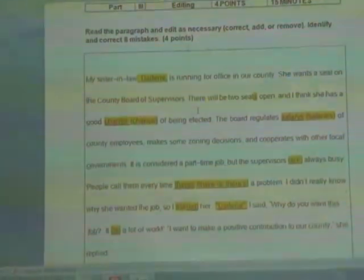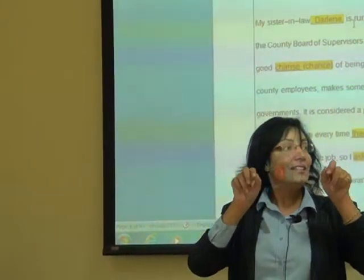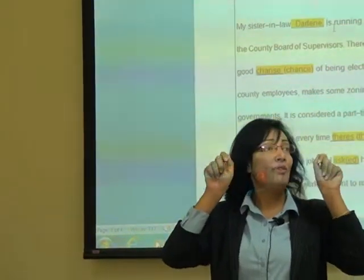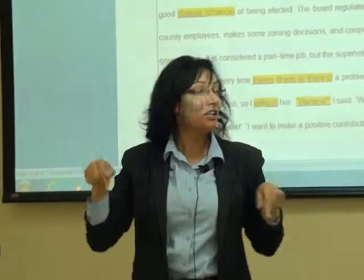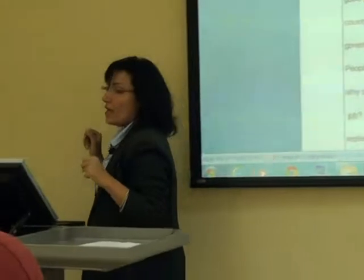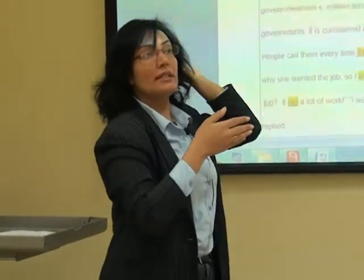Now for the editing exercise. The word 'darling' is placed between two commas — it's optional, like a picture frame. The sentence is grammatically correct and meaningful if you choose to take out 'darling.' For example: 'My sister-in-law, darling, is running for office in our country' — the sentence is still grammatically correct and meaningful without 'darling.'